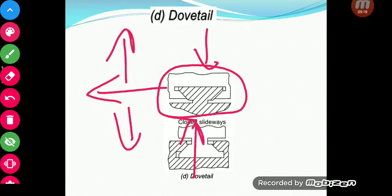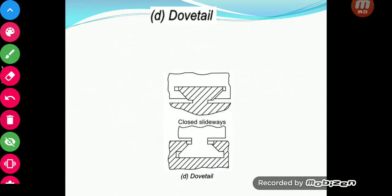The closed-type slideway also has resistance in the horizontal direction. Generally, a closed-type slideway is used in applications where a lot of different types of forces are experienced by the guideway in different directions, where more rigidity is required and the force vector takes up different directions. This is the use of closed guideways.